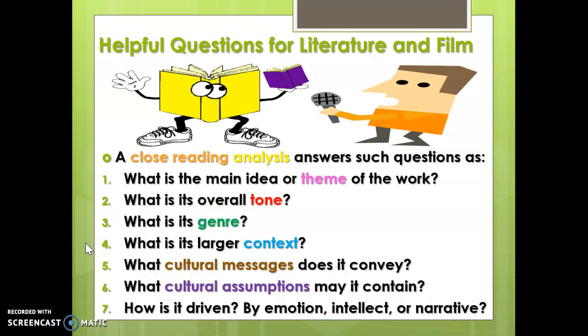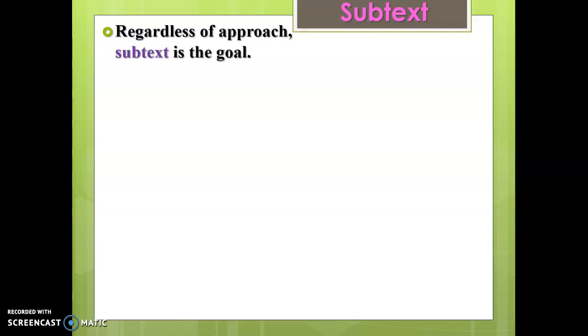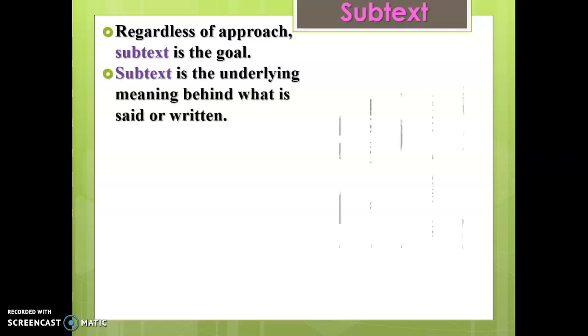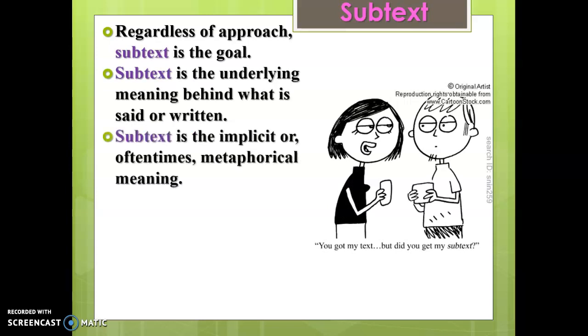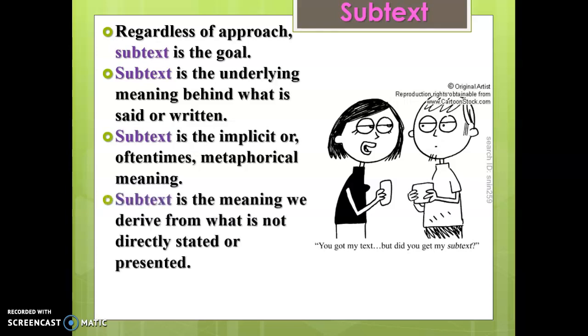This may be familiar from composition in terms of pathos, ethos, and logos. Is the work driven intellectually, emotionally, or by story and narrative? What is the point of the work itself, and that will influence how meaning is derived. Subtext is the hidden underlying meaning - the implicit, often metaphorical meaning behind what is said or written. The problem is it's not really directly stated; it's the meaning we derive from what is not directly stated or presented - we encode it to understand it.